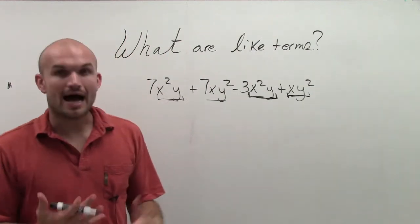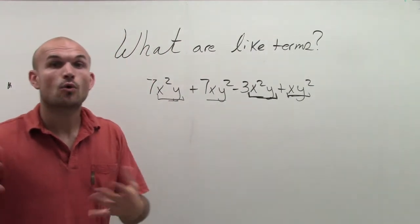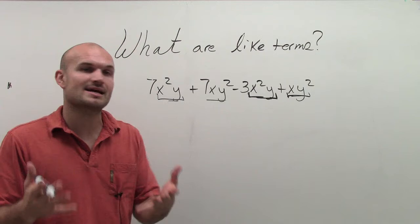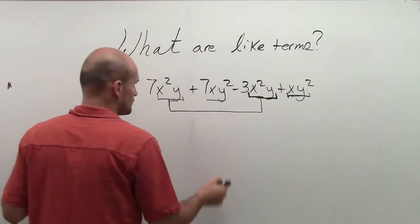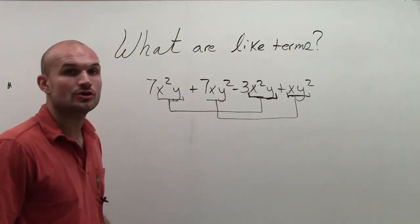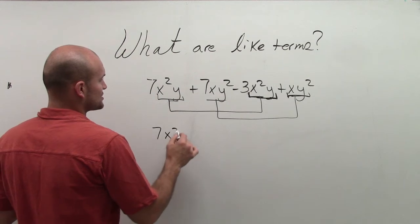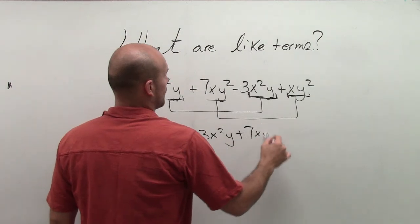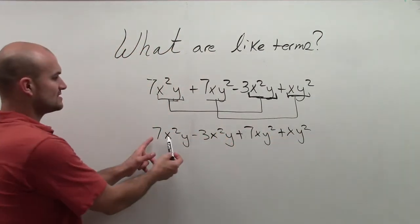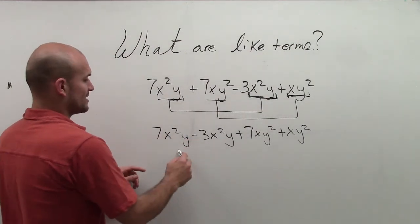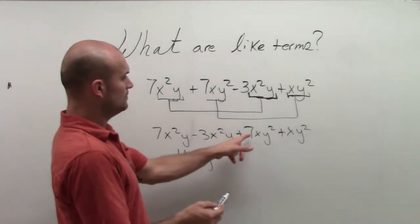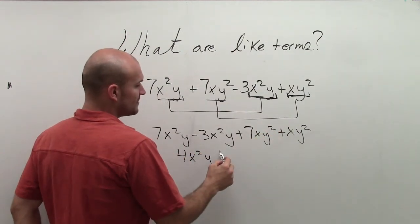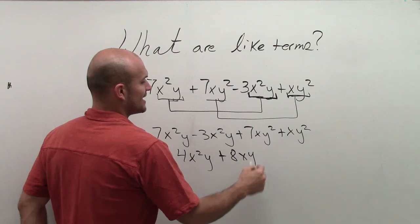So now that I can see I have like terms, we can combine those like terms, meaning I can combine the coefficients of those like terms and keep the like terms as is. So I have 7x squared y minus 3x squared y plus 7xy squared plus xy squared. So 7 minus 3 is 4x squared y. And 7 plus 1 is going to be plus 8xy squared.